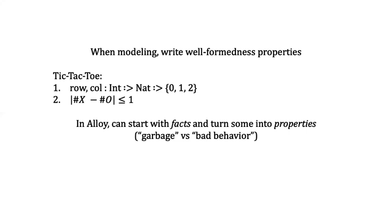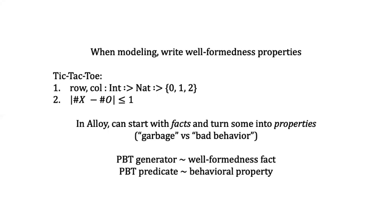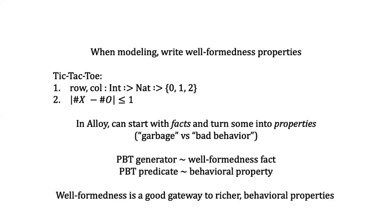These two parts correspond nicely with what you already encounter in property-based testing. The well-formedness facts correspond to what you want the generator to exhibit — only producing things that are not garbage. But then you also have a predicate for the behavioral property you want to check, which might be true or false. By the time students get to a system like Alloy, they're already primed with the idea that there are both garbage things and bad-behavior things, handled separately. Well-formedness is a very good gateway to thinking about richer behavioral properties of systems.